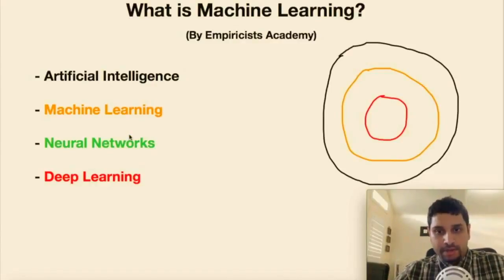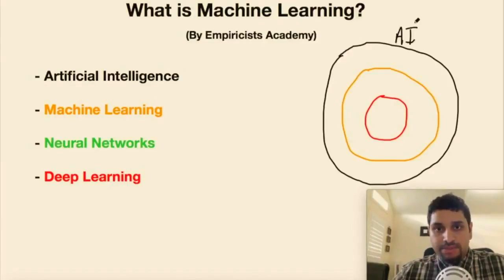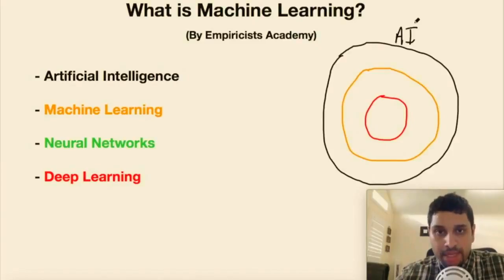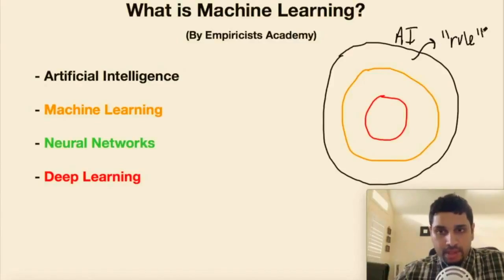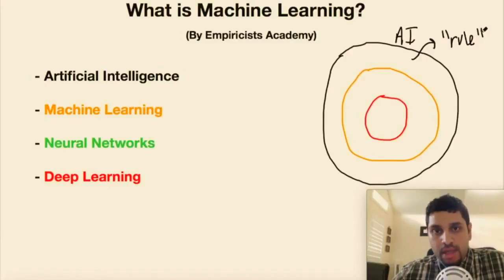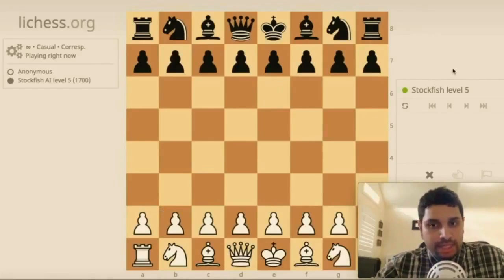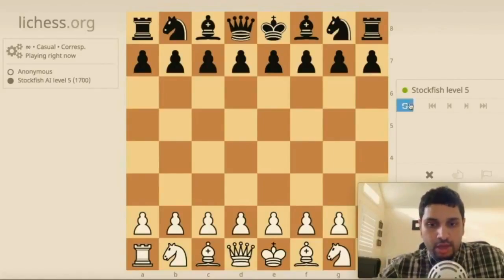The first thing we're going to go over is artificial intelligence. Artificial intelligence is very broad — what we're doing with AI is allowing the computer to think and make decisions. One form of artificial intelligence is rule-based AI. With rule-based AI, you're programming rules into the computer, and the computer uses those rules and instructions to make decisions. Let's see an example of this — let's look at this chess engine right here. This is the popular Stockfish chess engine.